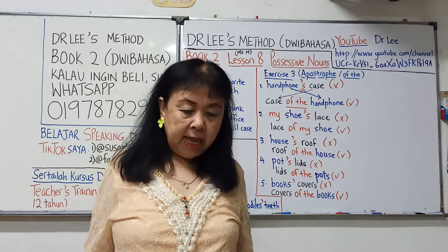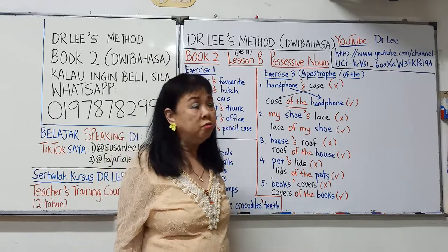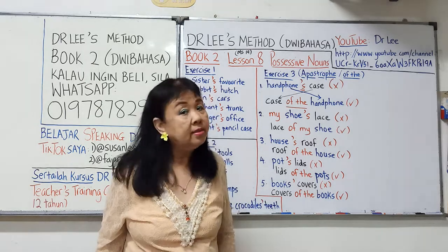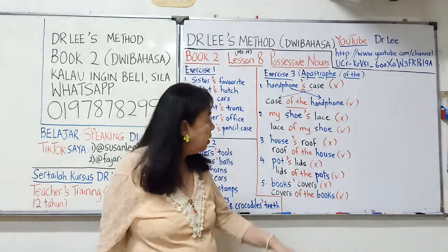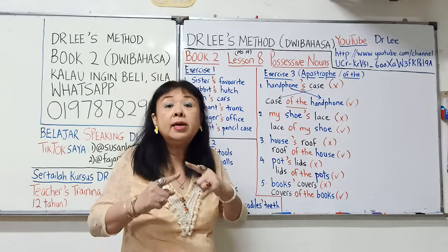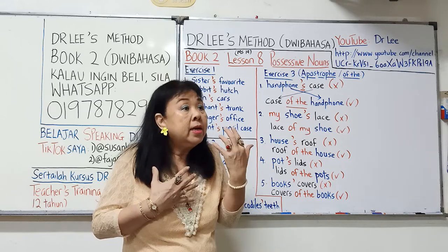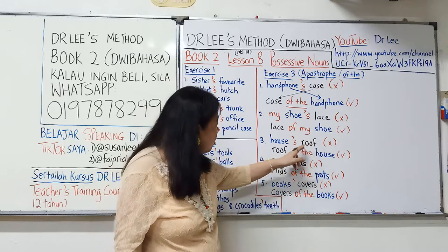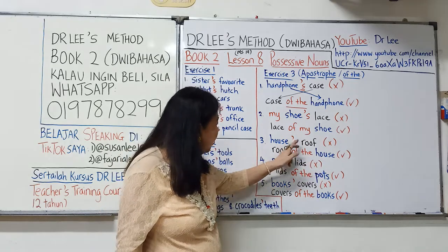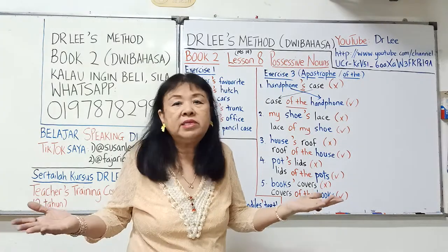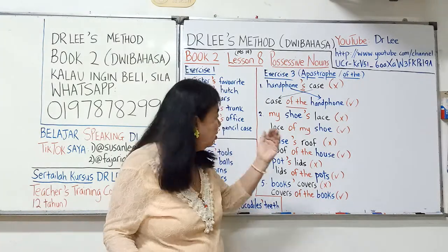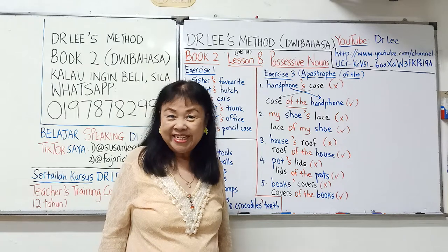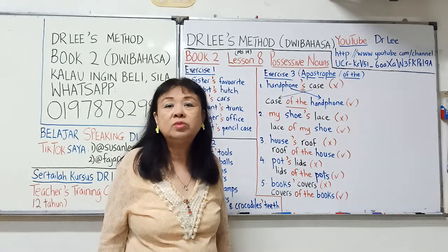Number 3: 'This is my house roof' — boleh tak? Tidak boleh, sebab rumah itu tidak bernyawa. 'Roof' pindah ke depan, 'house' di belakang, apostrophe S diganti dengan 'of the'. Jawapan yang tepat: 'This is the roof of the house.' Senang, tidak susah.